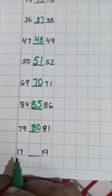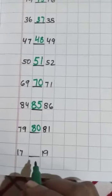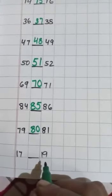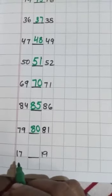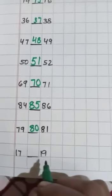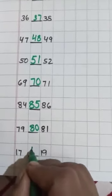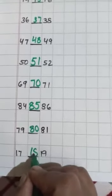Now, 17-19. Which number is come between 17 and 19? Yes, this is 18.